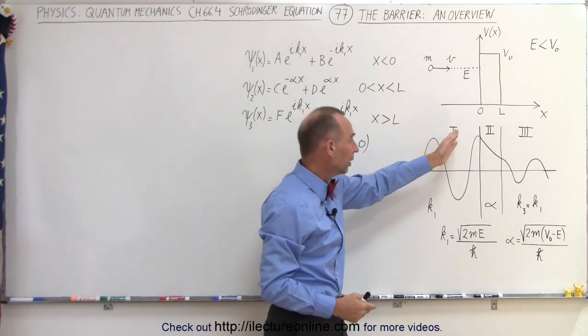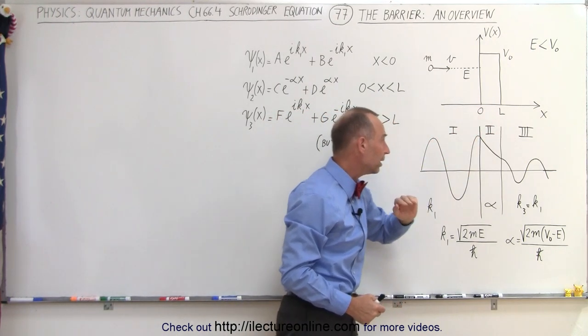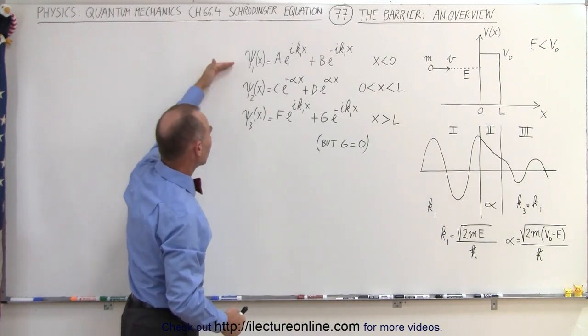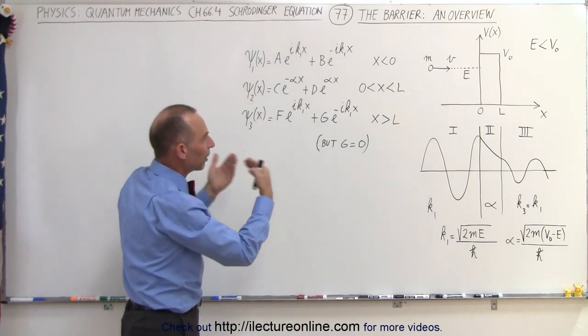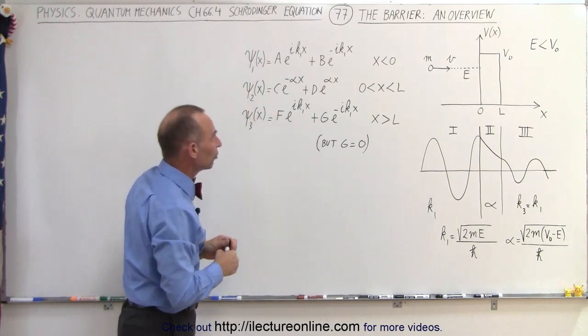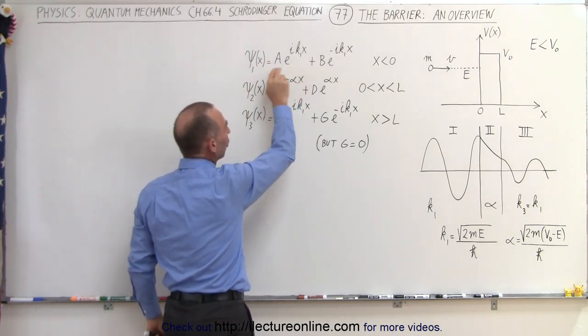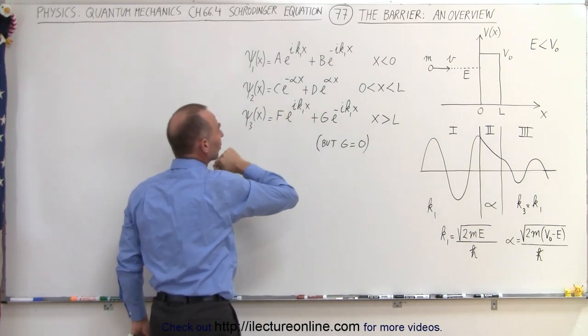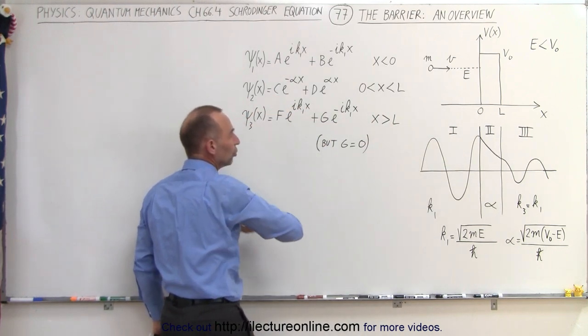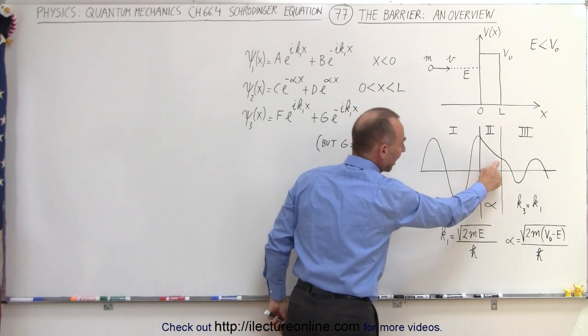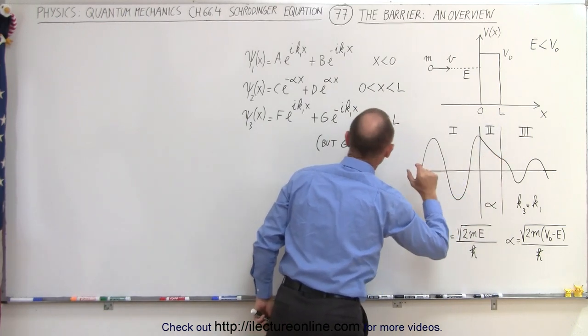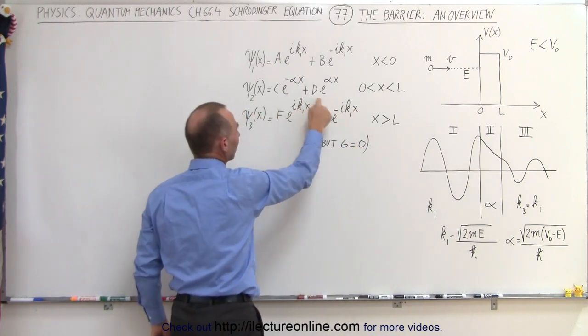So we have the three regions: region 1, region 2, and region 3. And we have the three waveforms of the three Schrodinger equations representing what a particle will do in each of the three regions. Notice we have two terms, one for the particle moving to the right and one for the particle moving to the left. We have the same for region 2 because potentially we could have some particles reflect off of this boundary and go in the opposite direction. So we have two terms for the second region.